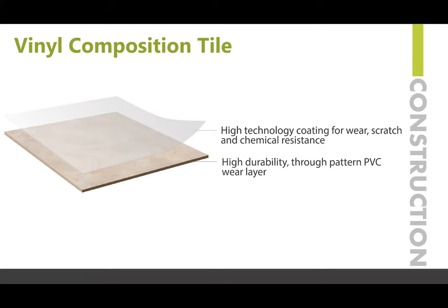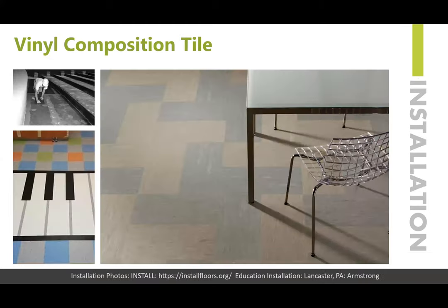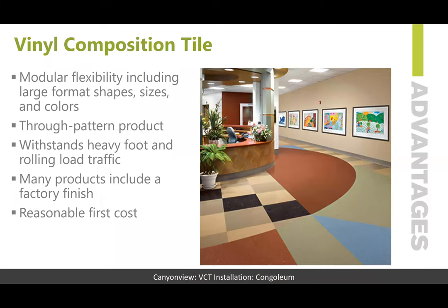The construction of VCT includes a durable through-pattern PVC wear layer and a coating that provides scratch and chemical resistance. Installation of VCT — although slightly thicker than some products — still requires a smooth subfloor ready for installation. Advantages of vinyl composition tile include modular flexibility, large format shapes, sizes, and colors. It is a through-pattern product, withstands heavy foot and rolling traffic, many products include a factory finish, and it has a very reasonable first cost, which is why it is often specified for tight budgets.